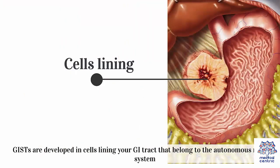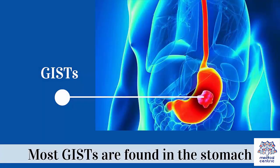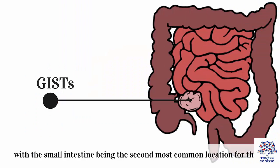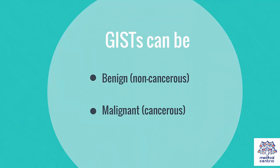GISTs are developed in cells lining your GI tract that belong to the autonomous nervous system. Most GISTs are found in the stomach, with the small intestine being the second most common location for them. GISTs can be benign, as in non-cancerous, or malignant, as in cancerous.